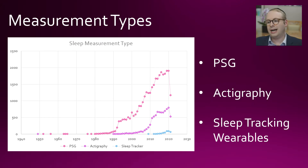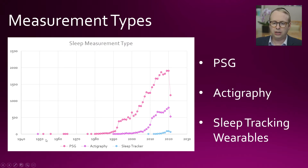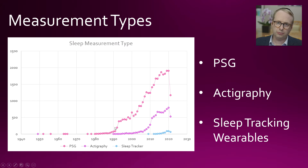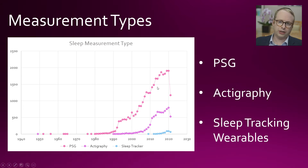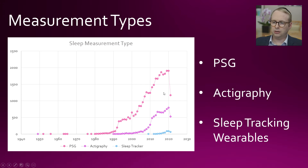We've got polysomnography, actigraphy, and sleep tracking wearables — I'm going to talk about actigraphy and sleep tracking wearables in the next video. From the early 1950s, polysomnography really took off, though it was limited to very specialised laboratories in its earlier stages. As computing and portable sensors became more widely available, there was a real explosion. This is really the gold standard for measuring sleep, and by far the most popular modality in sleep research. You can also see the drop-off around 2020–2021 in terms of COVID and its impact on publications.